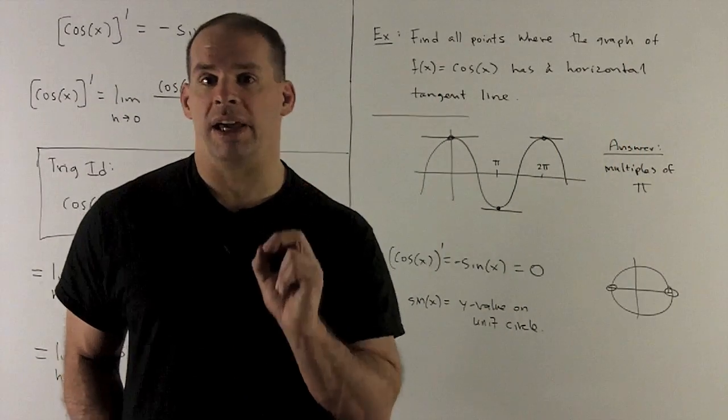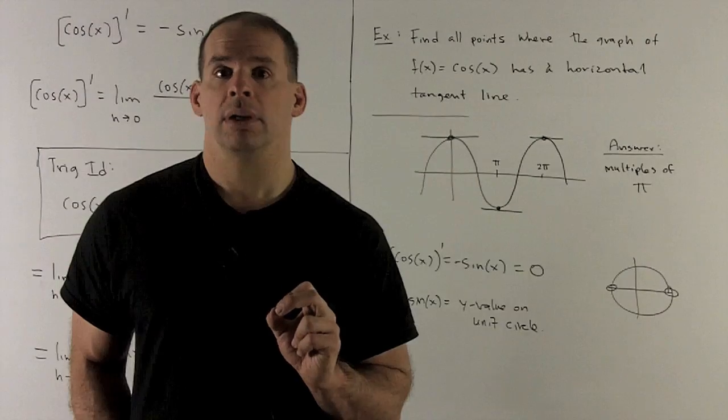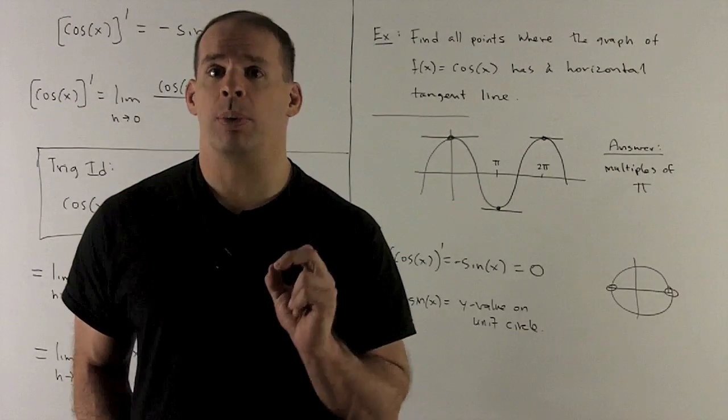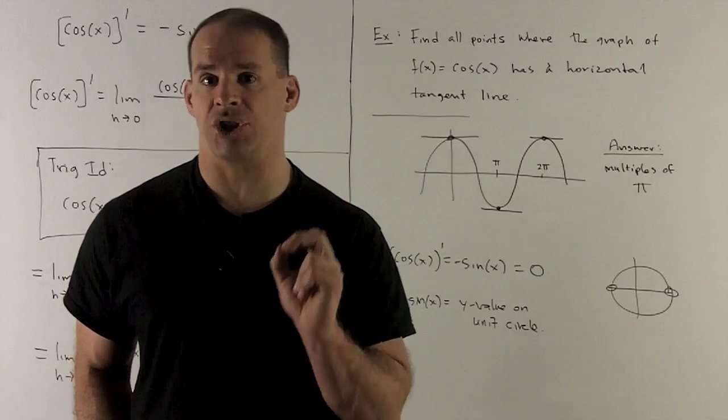All right. For an application problem. For the graph of cosine x, find all points where there is a horizontal tangent line.